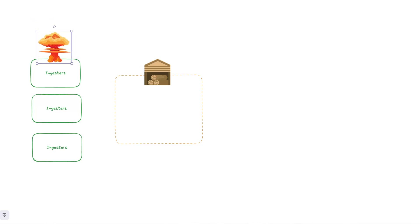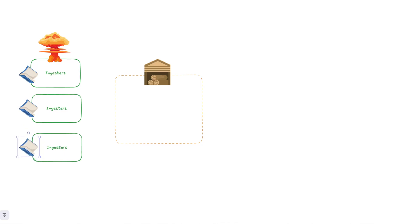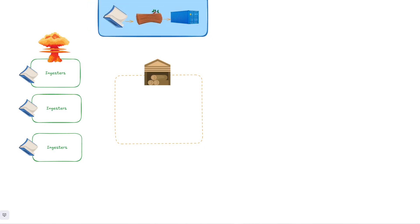Imagine a scenario where an ingester breaks down — all data that hasn't been flushed could be lost. This is why replication is crucial for Loki's durability. However, to further safeguard against data loss, Loki uses a write-ahead log. The WAL acts like a safety net, recording every log entry as it arrives. This log is stored on the ingester's local file system, ensuring that even if the ingester crashes, the data can be recovered upon a restart. The ingester essentially replays the WAL to restore all acknowledged logs before resuming normal operations.